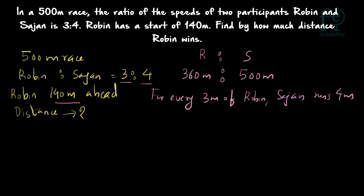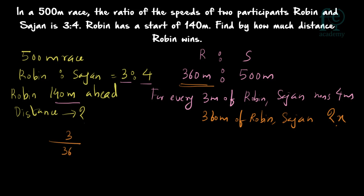We have to find out: when Robin completes the race, how many meters has Sajan run? Robin has to run 360 meters to complete the race. So for 360 meters of Robin, how many meters will Sajan be covering? Let that be x. For every 3 meters of Robin, Sajan runs 4 meters. So for 360 meters of Robin, the proportion gives us 3 divided by 360 equals 4 divided by x, which gives x equal to 120 times 4, that is 480 meters.